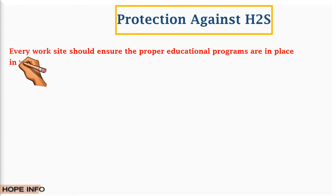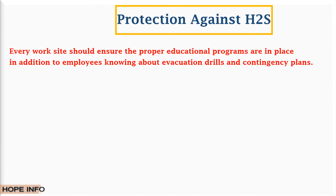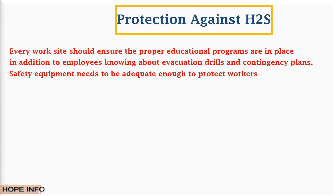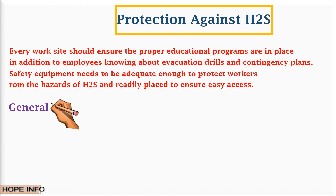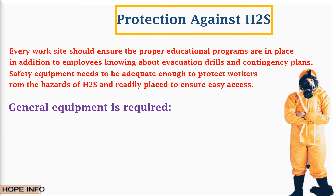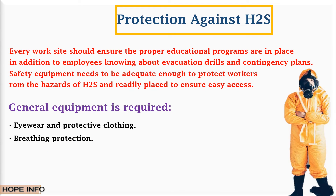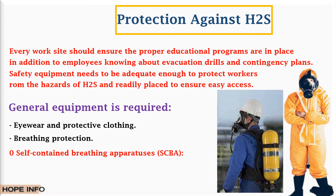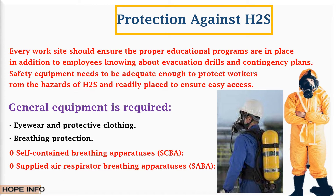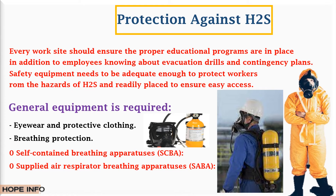Protection against H2S — every work site should ensure proper education programs are in place, including evacuation drills and contingency plans. Safety equipment must be adequate to protect workers from H2S hazards and readily accessible. General equipment required includes eye wear and protective clothing. Because skin absorption is minimal, employers should focus on maintaining a respiratory protection program. Most self-contained breathing apparatus (SCBA) supply air for 30 minutes, though other cylinders are available for shorter or longer use. Another type is the positive pressure supplied-air breathing apparatus (SABA), which uses over-the-shoulder or hip-mounted cylinders with a full face mask; it is lighter than the SCBA but restricted by the length of the hose.